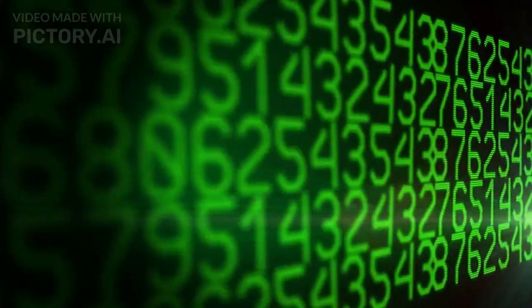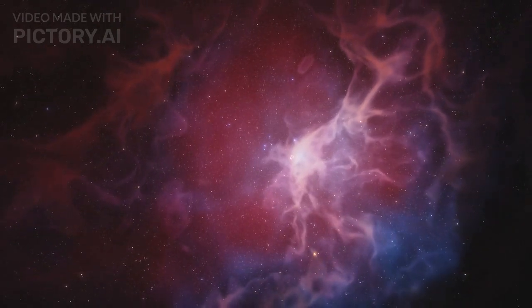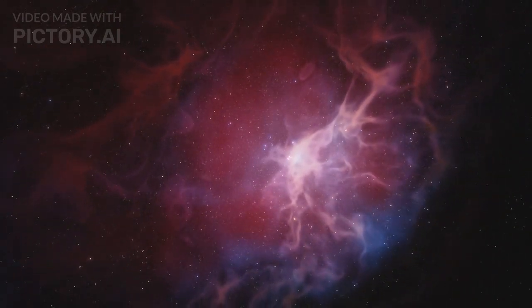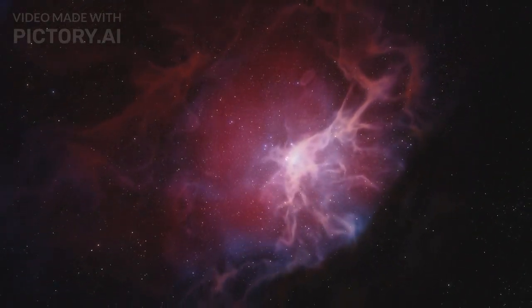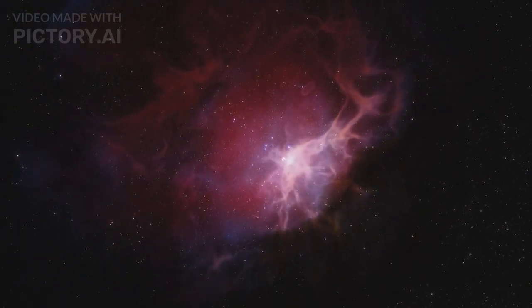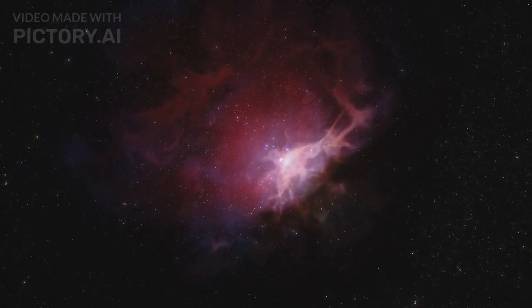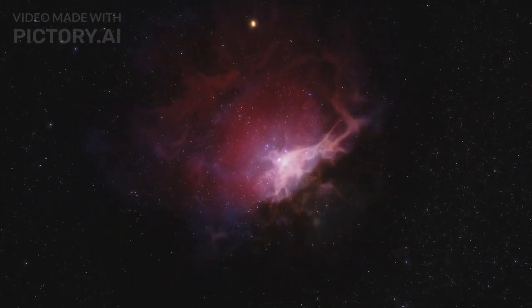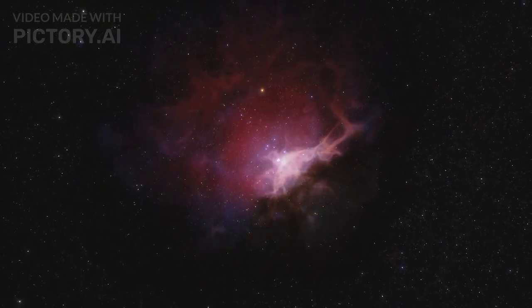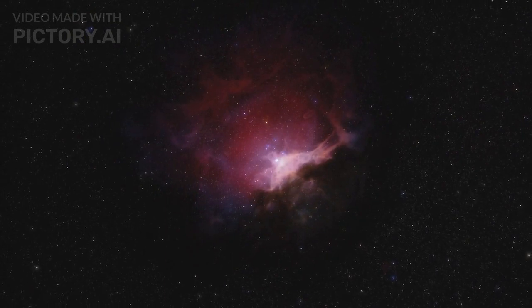Number 5. Messier 27, the Dumbbell Nebula, also known as the Apple Core Nebula, M27 and NGC 6853, is a planetary nebula in the constellation Vulpecula at a distance of about 1,360 light-years. It was the first such nebula to be discovered by Charles Messier in 1764 and is named for its resemblance to a dumbbell.